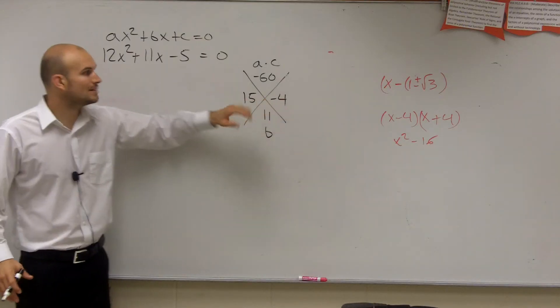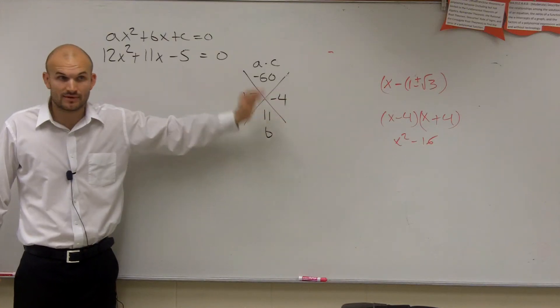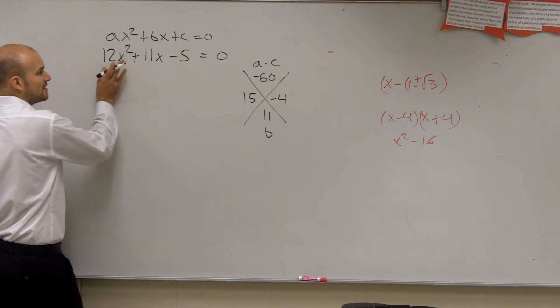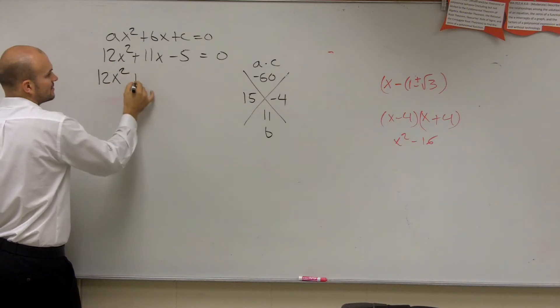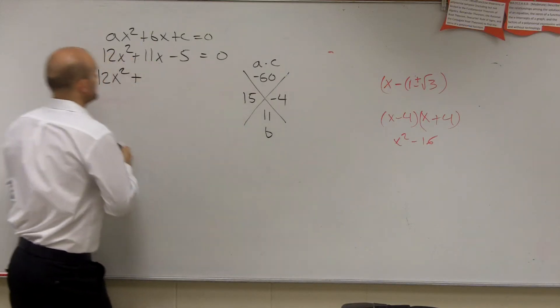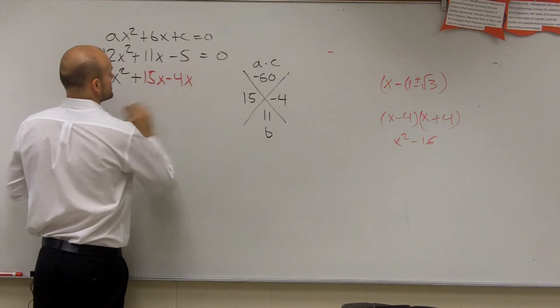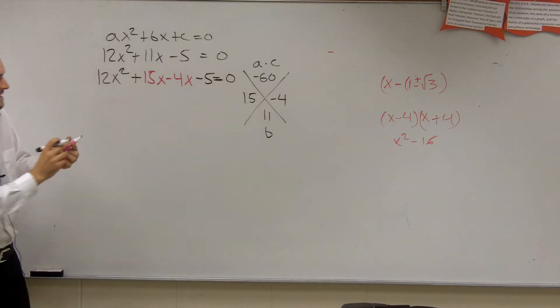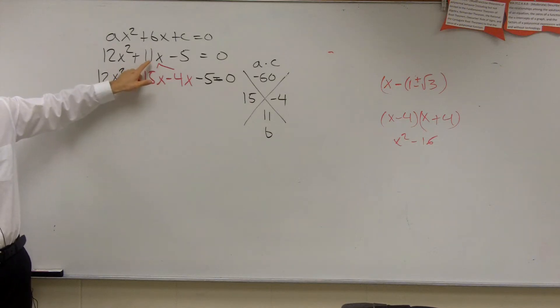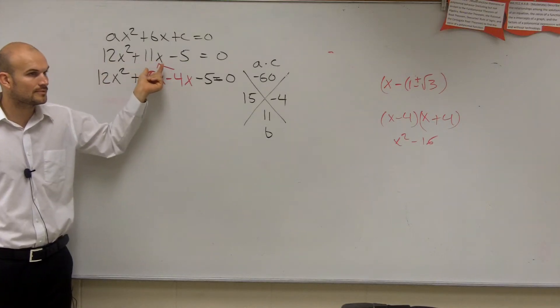So now what do I do with these numbers? Well, when a was 1, these were our two values that we could use as factors, right? When a equals 1. However, ladies and gentlemen, our a equals 12. So what we're going to do is I'm going to rewrite my equation now, except I'm going to use 15x and minus 4x as my middle terms. So you guys notice that these two terms replace my previous middle term. That's what these two values do. I'm going to use these as my linear terms that are going to replace my middle term.